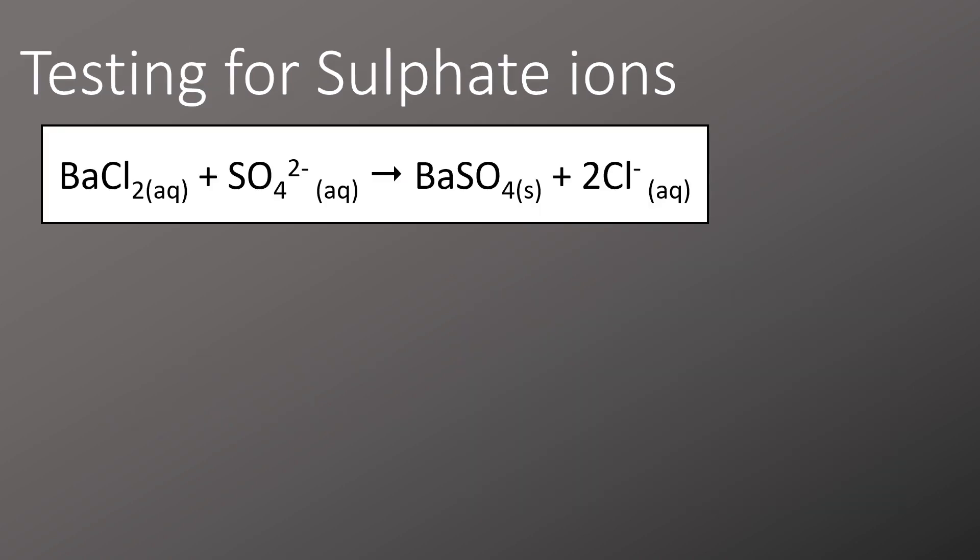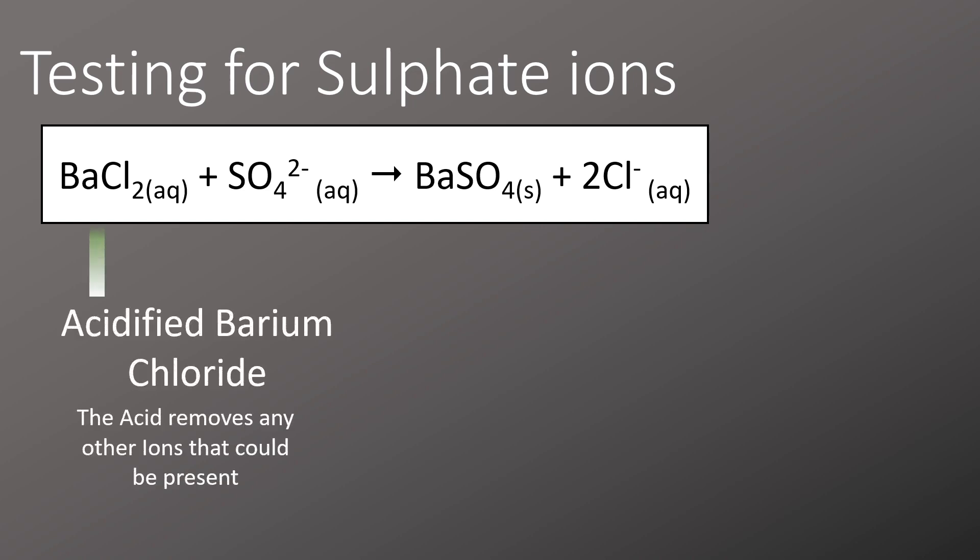This insolubility of barium sulfate is useful when we test for sulfate ions. If we react barium chloride with sulfate ions, we form the insoluble precipitate of barium sulfate. First of all, we must use acidified barium chloride. This acid removes any other ions that could be present, and we form the insoluble barium sulfate.